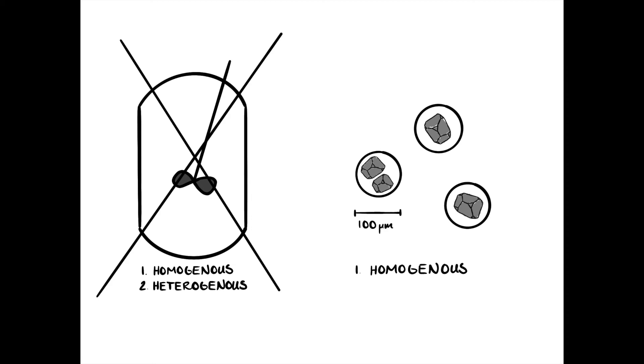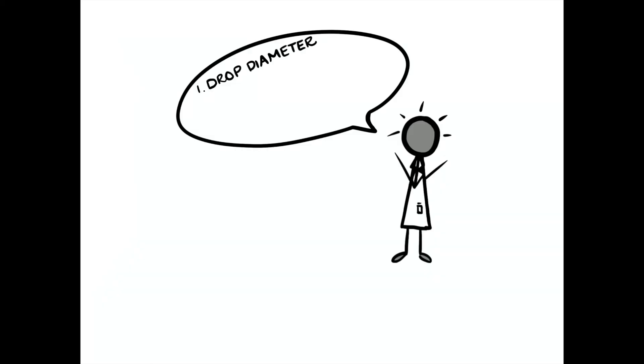With only homogeneous nucleation, nucleation events are so slow that each drop only contains a couple of crystals, leading to a uniform size distribution. This technique of crystallization in drops has now been widely used by scientists, and new approaches are constantly being explored to better control crystal growth in drops.